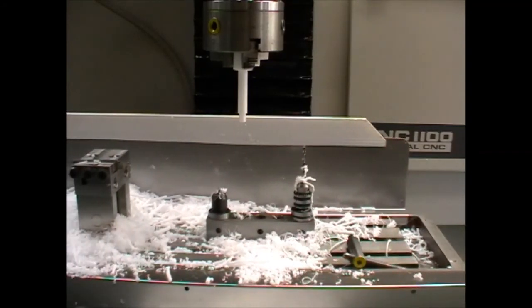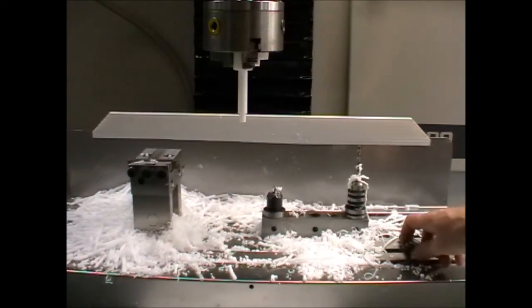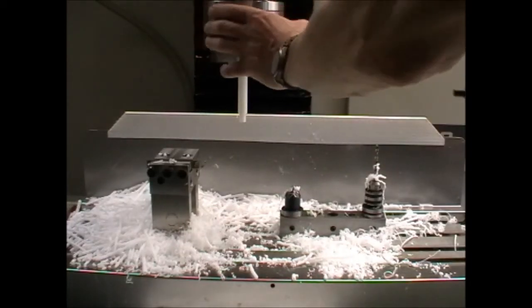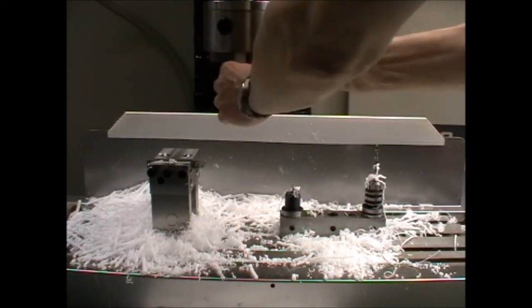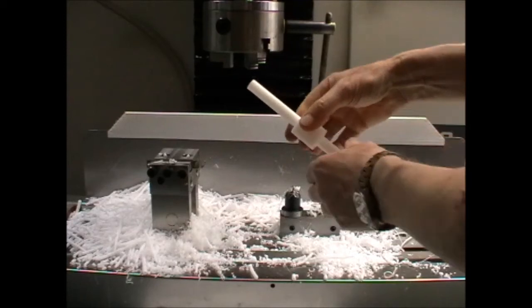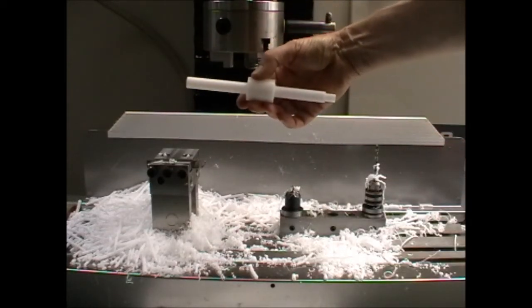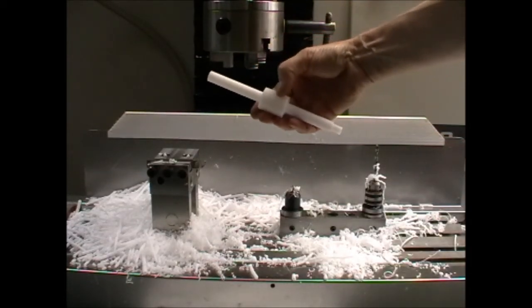And return to a position where I can set up the next part. So now we have both ends machined and they can be cut in half.